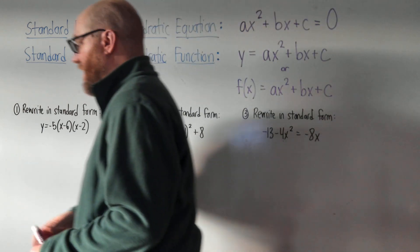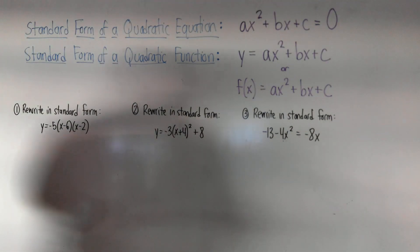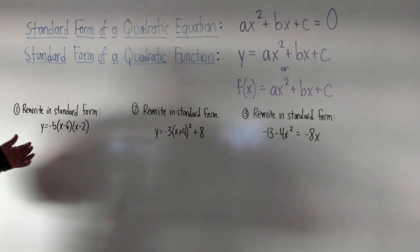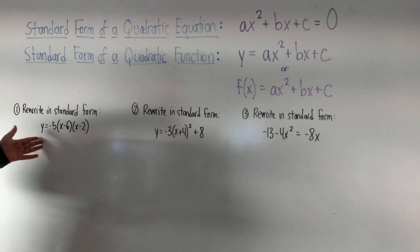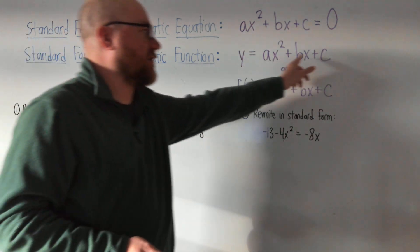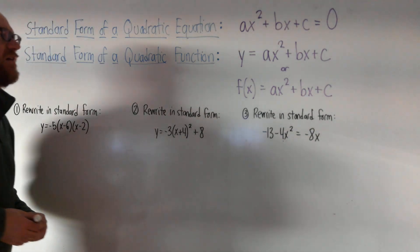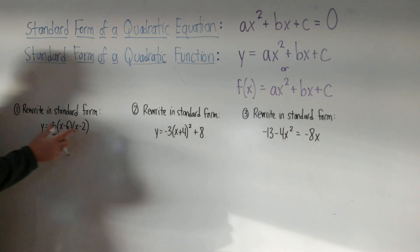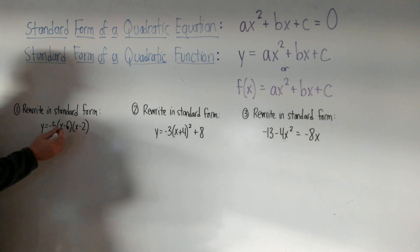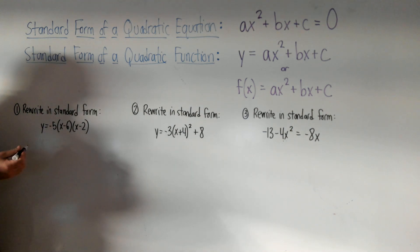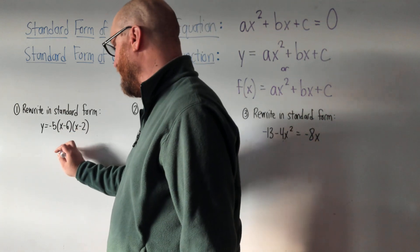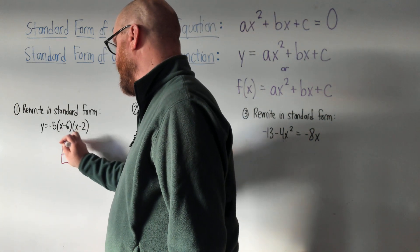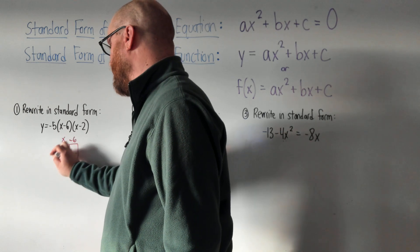Let's do three examples today. All three have the same directions: rewrite in standard form. We want all of these equations to look like one of those forms. Number one has a y involved, so we want it to look like y equals ax squared plus bx plus c. There's no squared term visible yet — it's hidden. We have three things being multiplied, and I'm going to multiply the two parentheses first using box method.